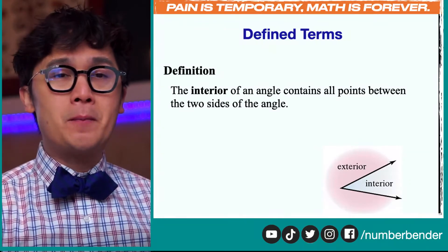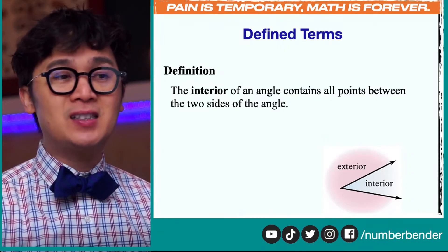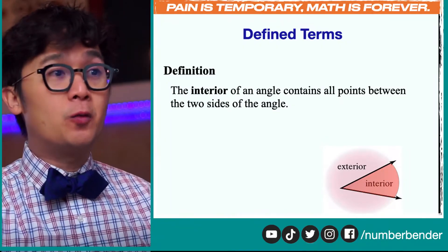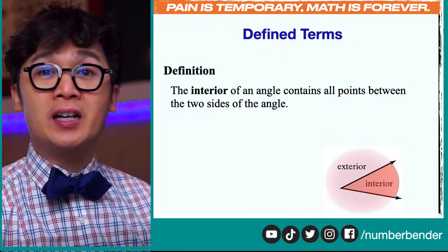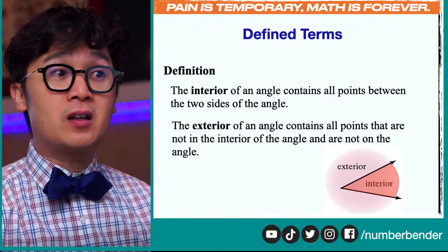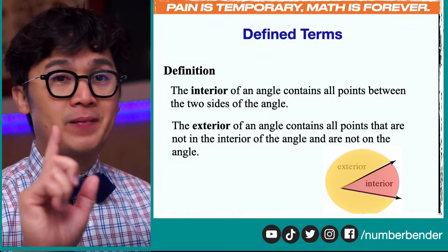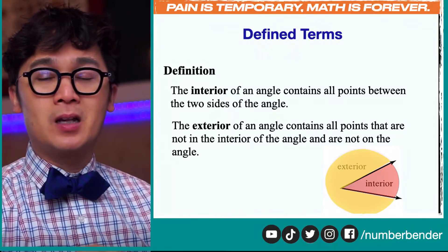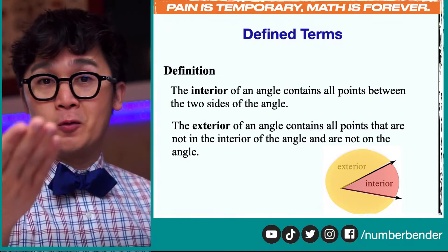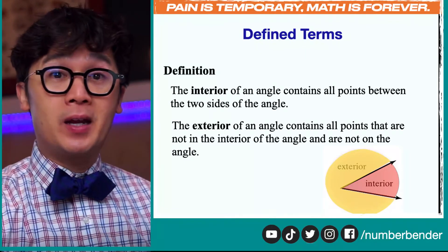So let's define another part of our angle. First, we need to know what the interior of an angle looks like. The interior is inside our angle, represented by this region right here — it contains all the points between the two sides of an angle. And if we have an interior, we also have an exterior of an angle, which contains all the points that are not in the interior, represented by this outer region. So make sure that when we use words like exterior or interior of an angle, we understand what we're describing in geometry.